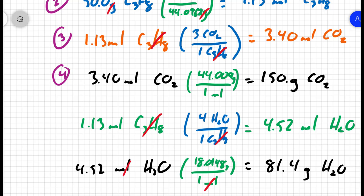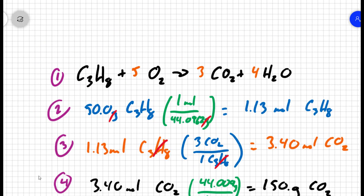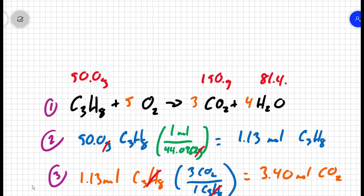To find the mass of oxygen, I simply need to use the conservation of mass. I know that I started with 50 grams of propane. I know I make 150 grams of carbon dioxide and 81.4 grams of water. So that means I produce 231.4 grams of stuff, which means I need to start with 231.4 grams. So if I start with 231.4 grams and only 50 grams of it is propane, that means I must have 181.4 grams of oxygen.